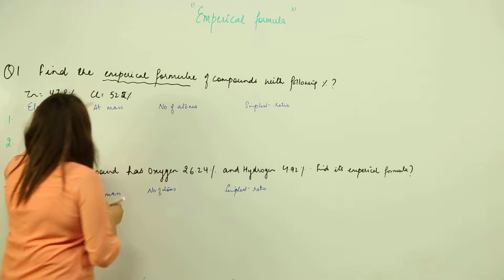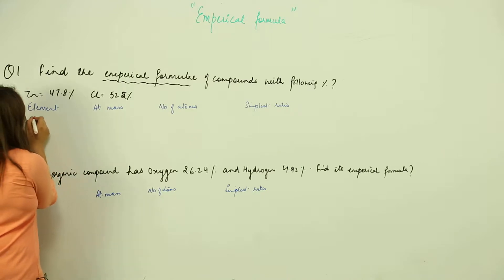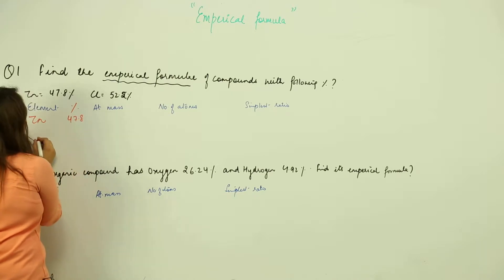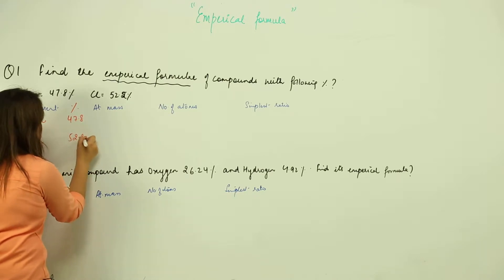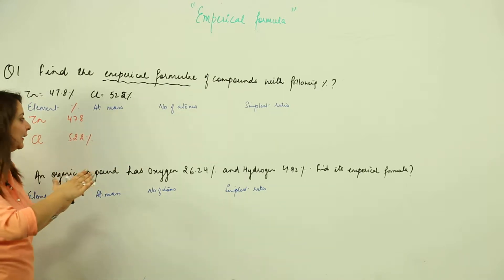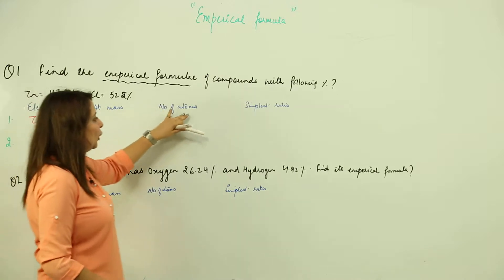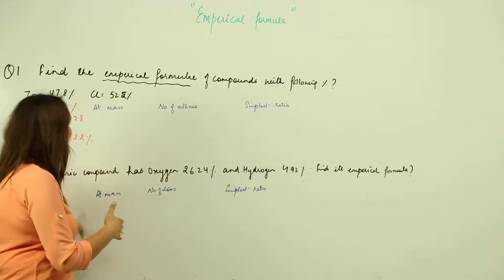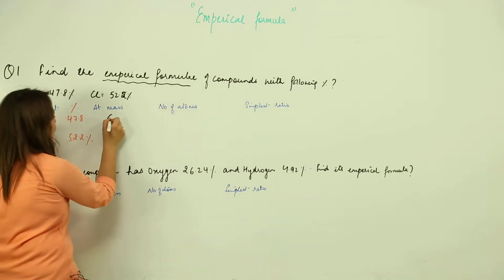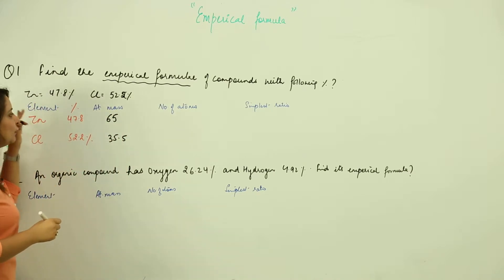We have zinc at 47.8% and chlorine at 52.2%. We make a table with columns for element, percentage, atomic mass, number of atoms, and simplest ratio. The atomic mass of zinc is 65 and chlorine is 35.5.